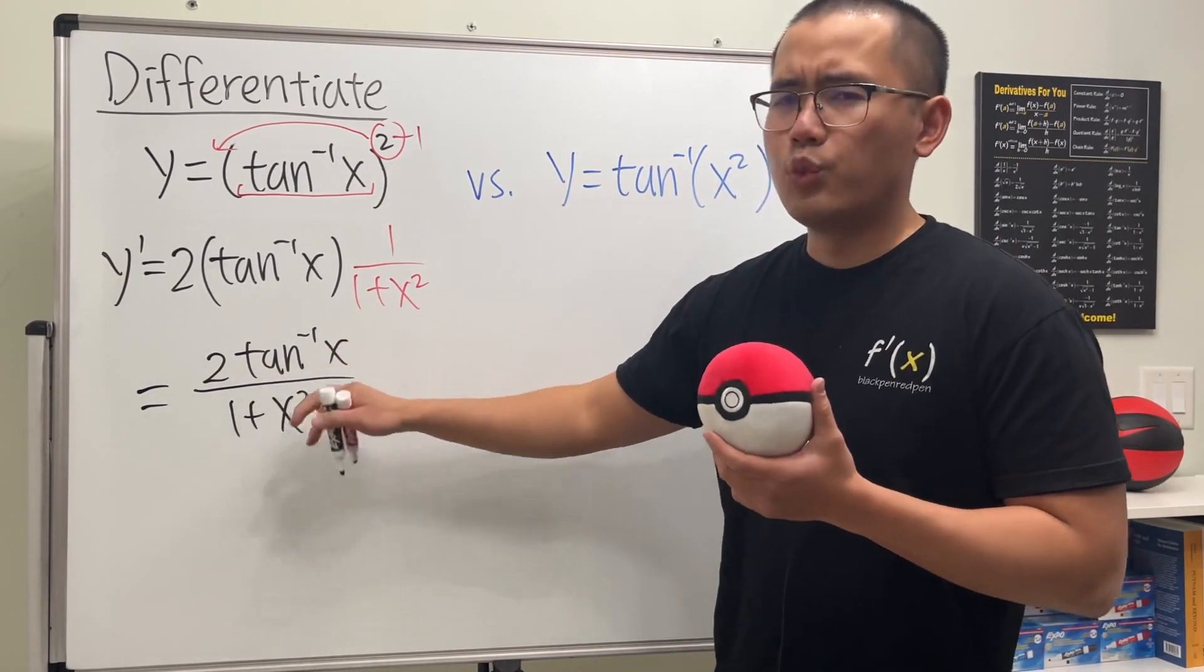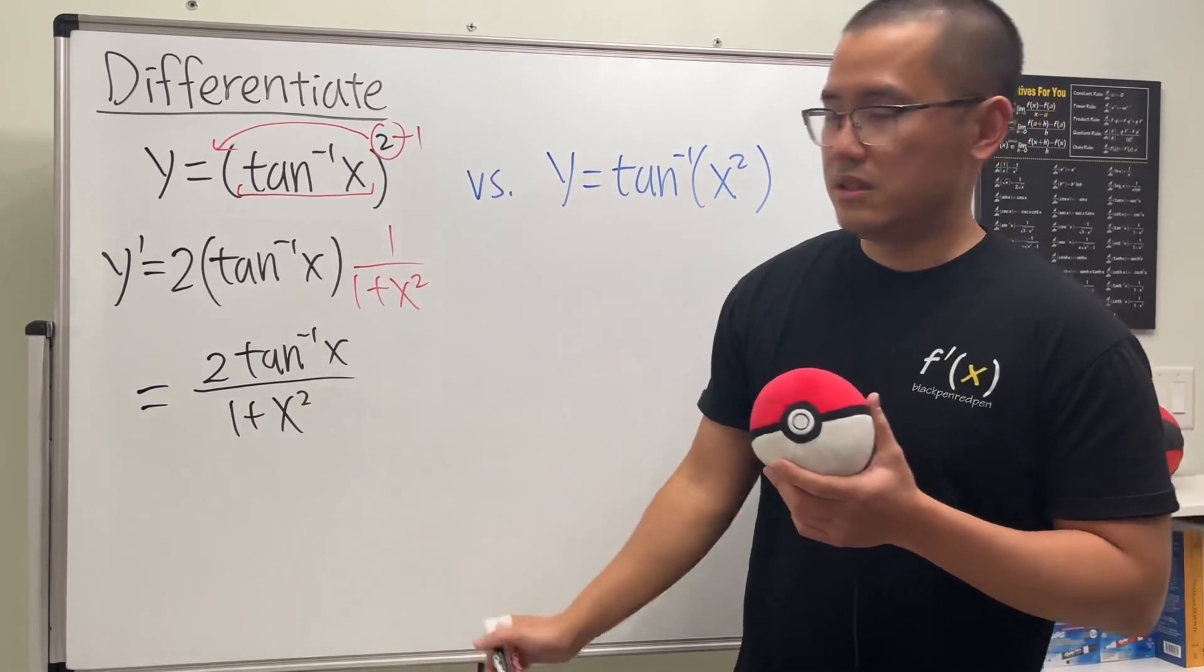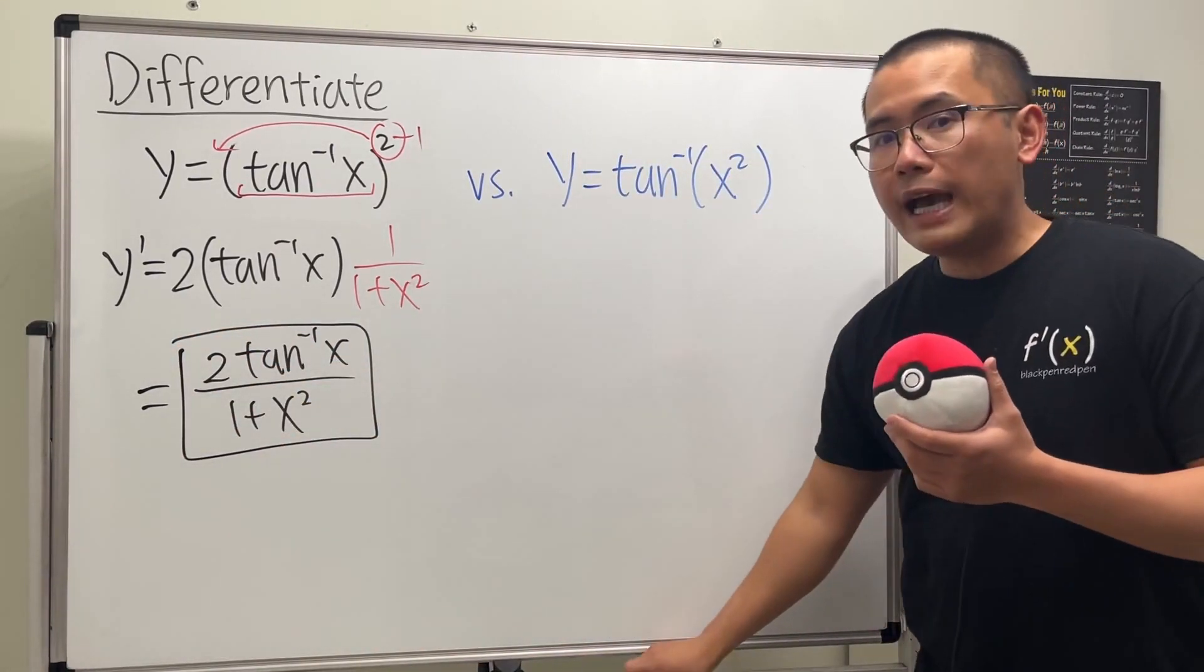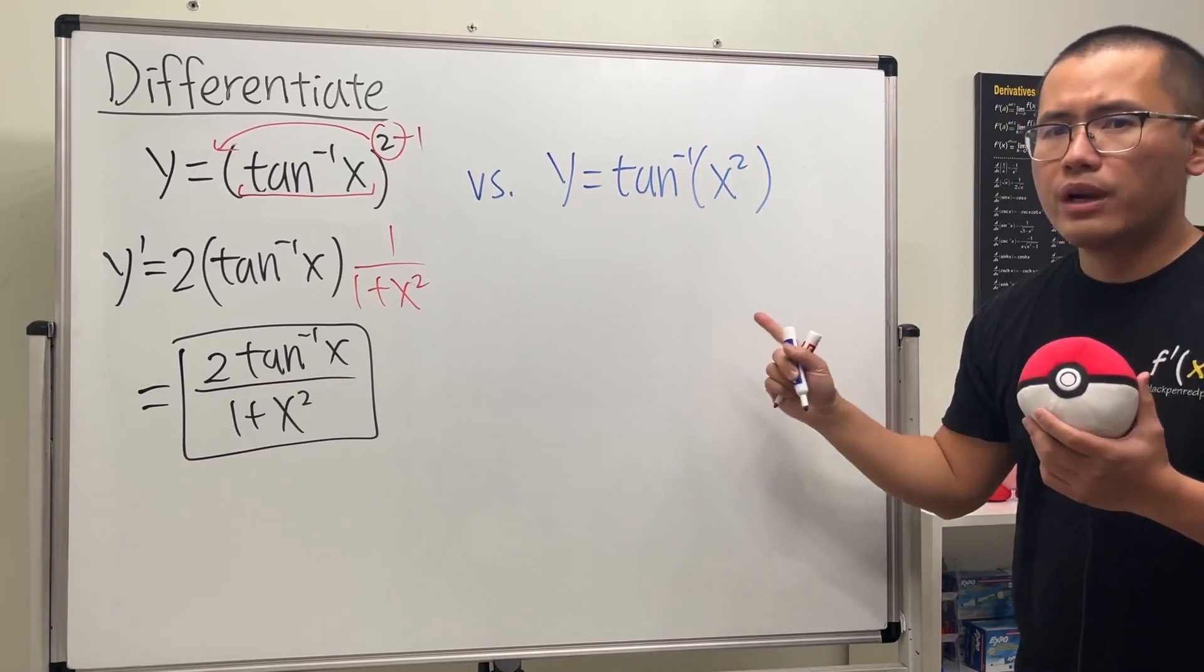And if we only have x inside of the inverse tangent, or any trig function, we don't need the parentheses - this is definitely okay. Now let's look at this one. We have inverse tangent and the input is x squared, so be really careful with this.